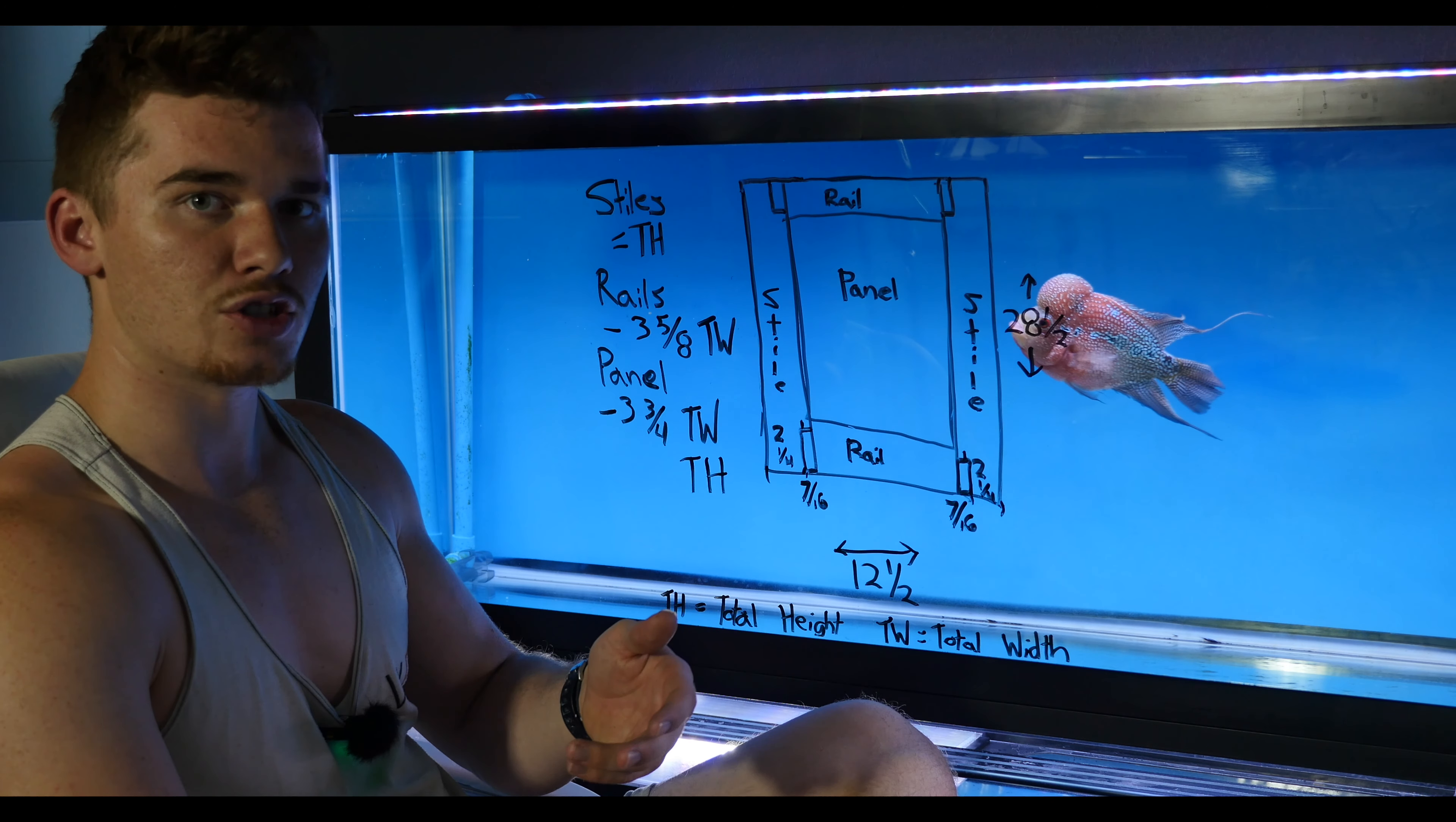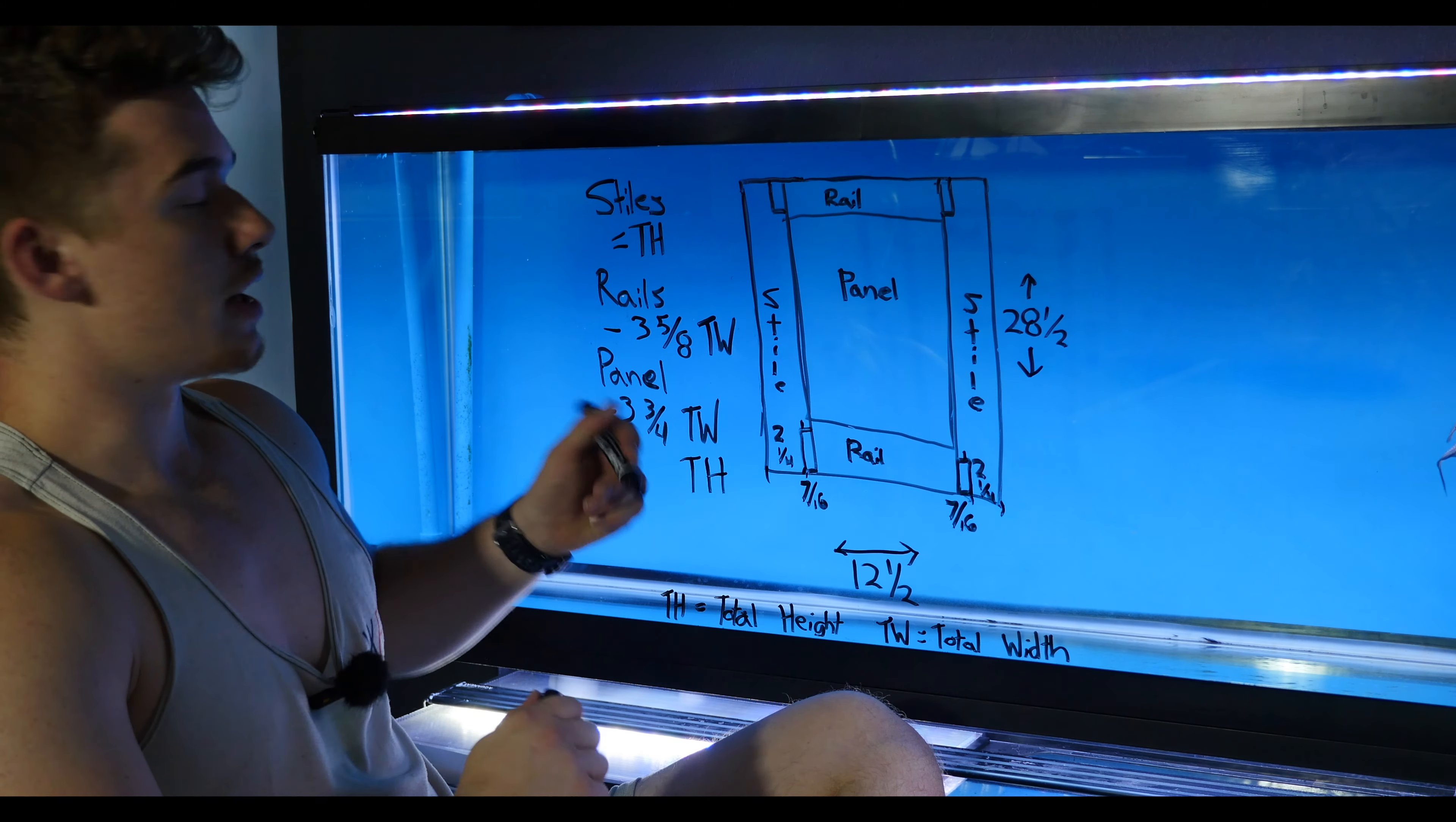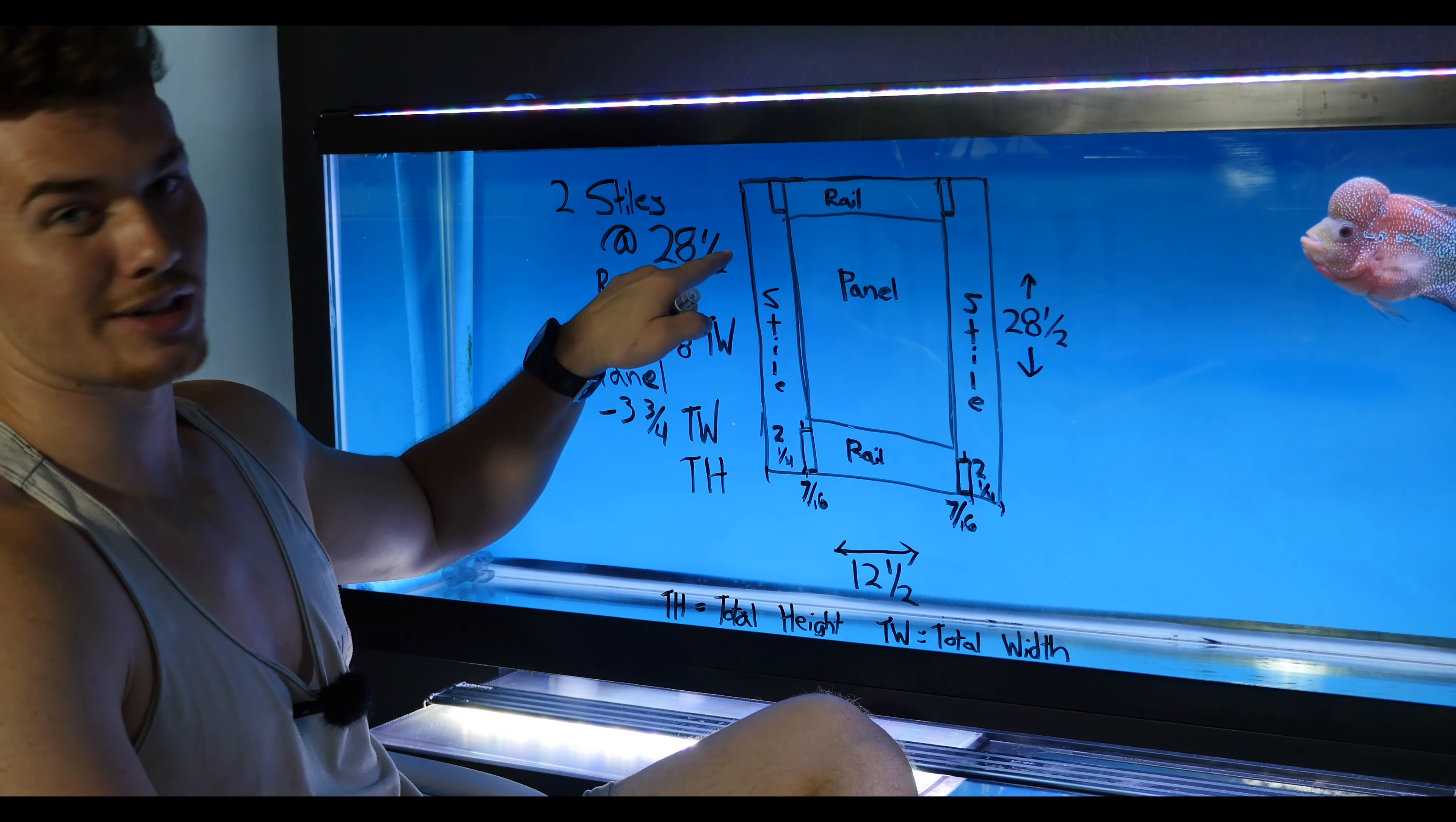Now there's only three equations you need to know for the material list, starting with the styles. Considering that the way we're building this door, the styles run the full height of the door, we don't have to subtract anything from them. So if our door is twenty-eight and a half tall, then our style is just going to equal our total height of the door. So we're going to need two styles at twenty-eight and a half.